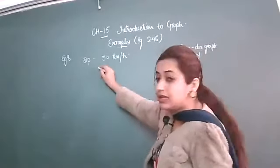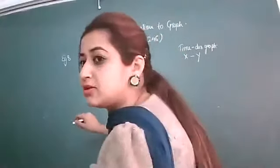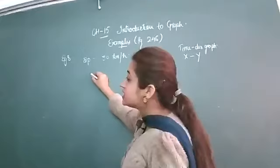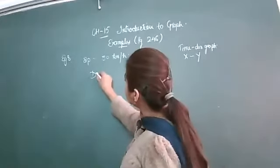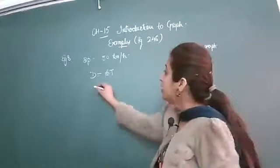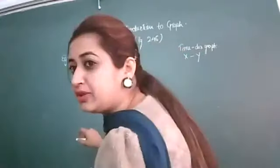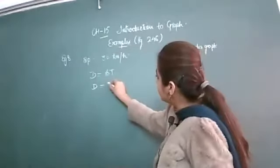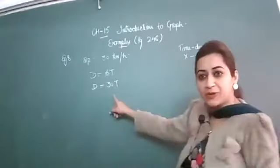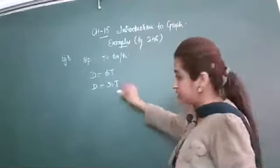Now look here, we have the formula. Speed is equal to distance upon time, so distance is equal to speed into time. Distance is D, speed is 30 kilometers, and time is t. So this is your expression or equation.